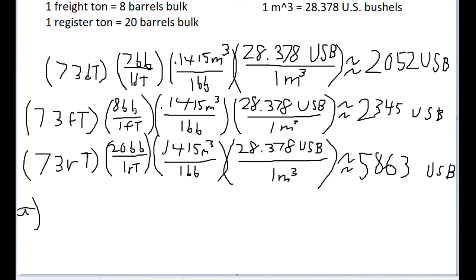So now that we have 73 displacement tons and 73 freight tons, both in terms of U.S. bushels, and because the problem asks for about how many extra U.S. bushels, that means we'll want to do a subtraction here.